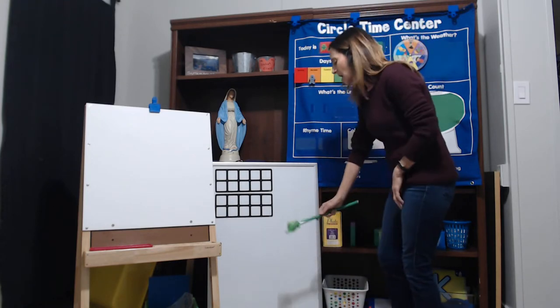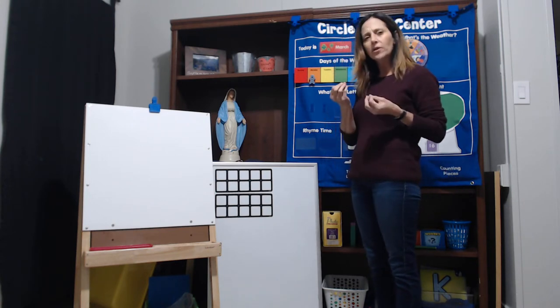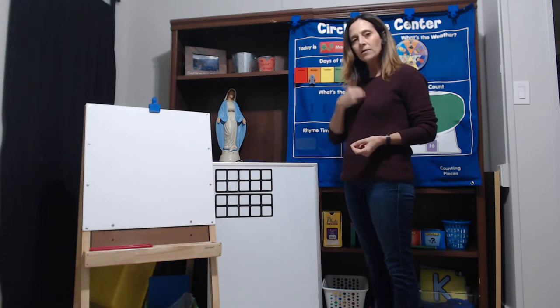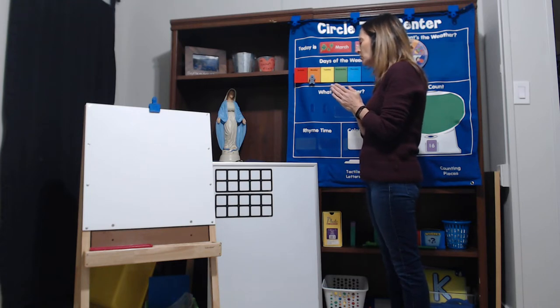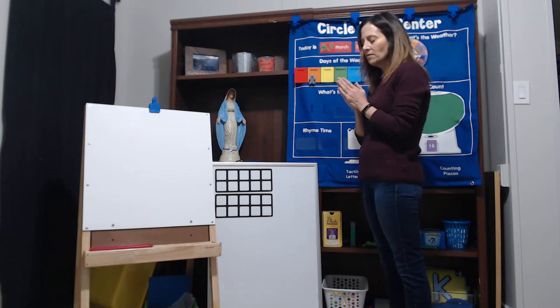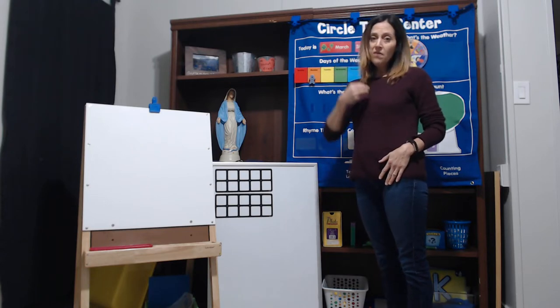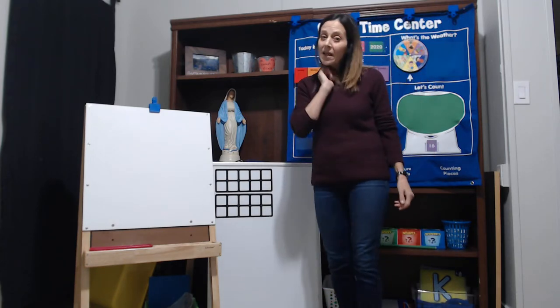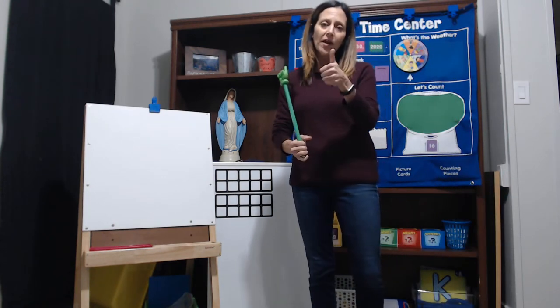So as always we start our day in prayer. I'm going to be looking at Mary and let's go ahead and do that together. We're still working on the sign of the cross and slowing down and making sure we're being very precise. In the name of the Father and the Son and the Holy Spirit. Amen. Angel of God my guardian dear to whom God's love commits me here. Ever this day be at my side to light and guard to rule and guide. Amen. In the name of the Father and the Son and the Holy Spirit. Amen. We will be working on the Hail Mary coming up soon in April. Keep working on your angel of God one until we do that.